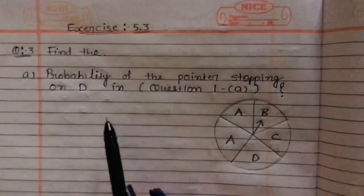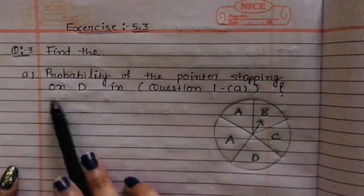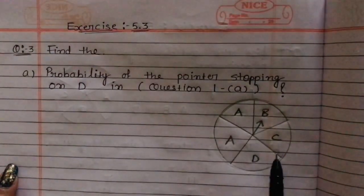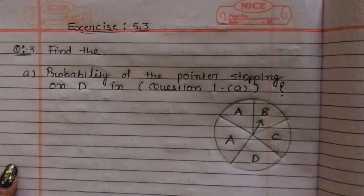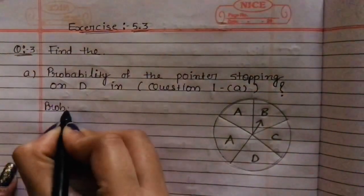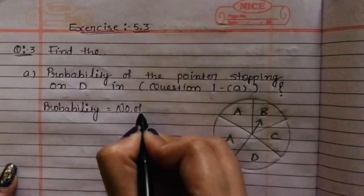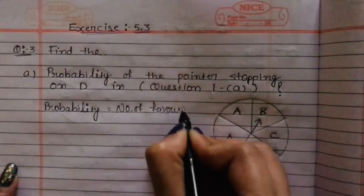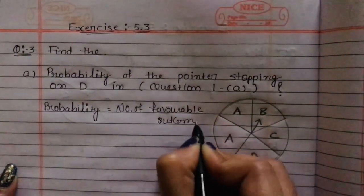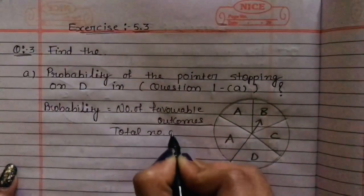Hello everyone, so today we are going to learn exercise number 5.3, question number 3. Find the first probability of the pointer stopping on D in question 1A. So first of all, probability की formula क्या है — probability is equal to number of favorable outcomes upon total number of outcomes.